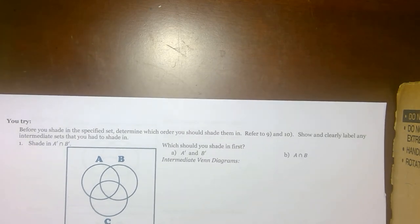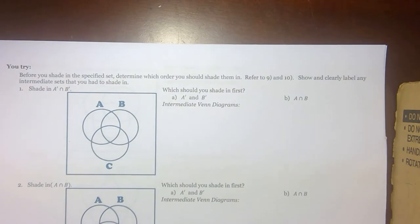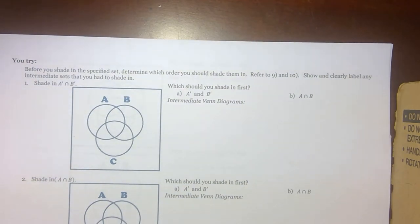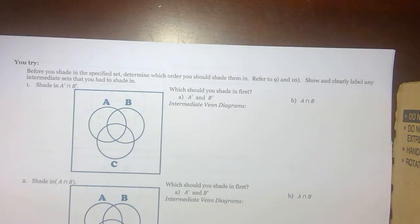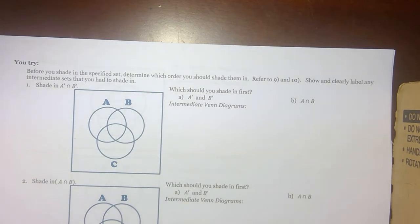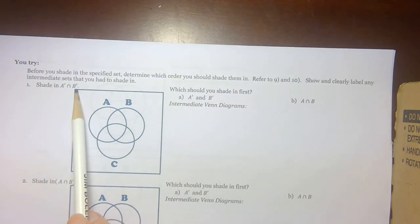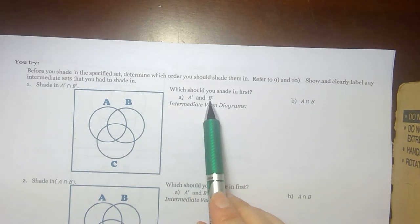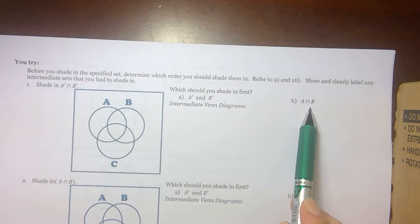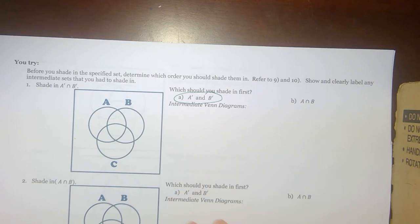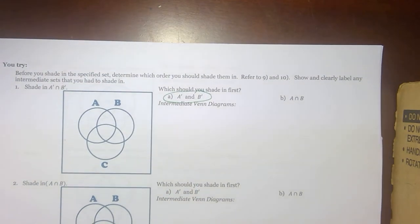Before you shade the specified set, determine which order you should shade them in. Show and label clearly any intermediate sets you have to shade. For number one, shade the intersection of A prime and B prime. Before we can do that, we need A prime as well as B prime — those are the intermediate Venn diagrams to produce first.